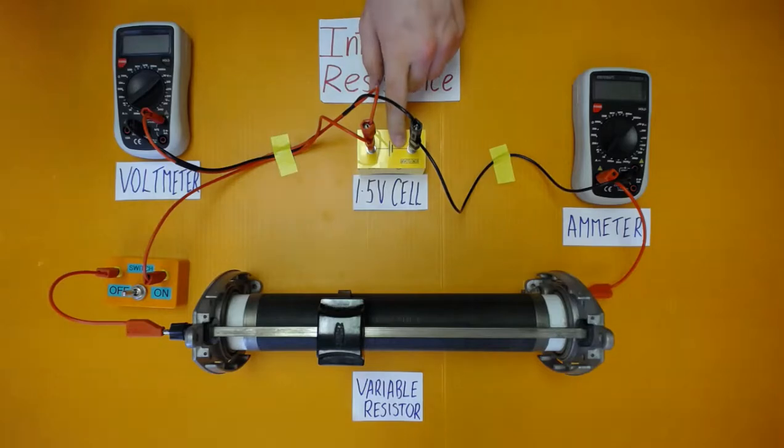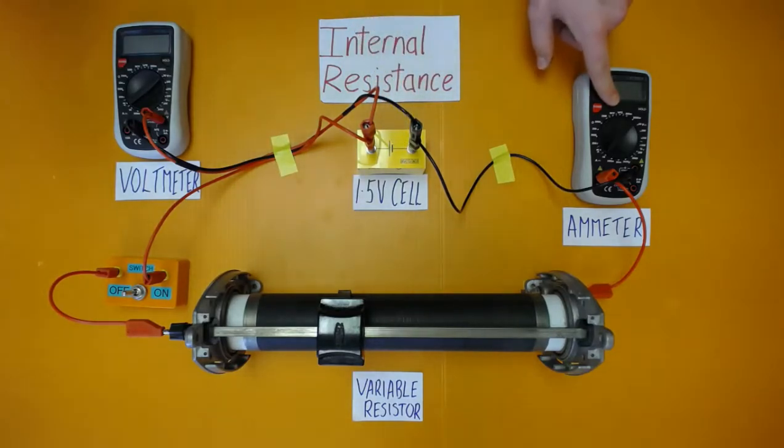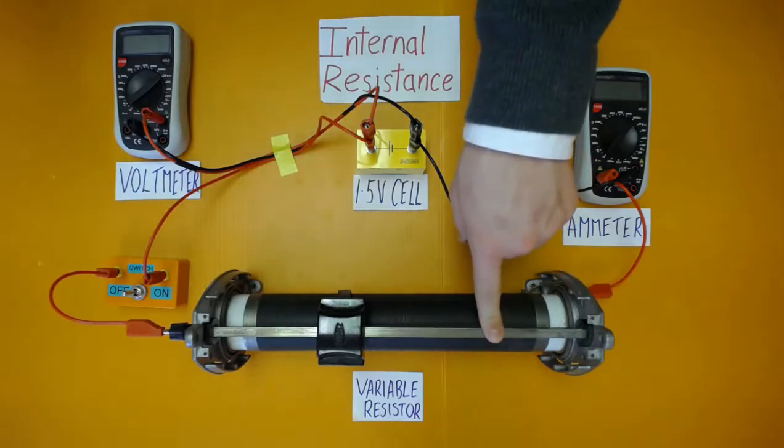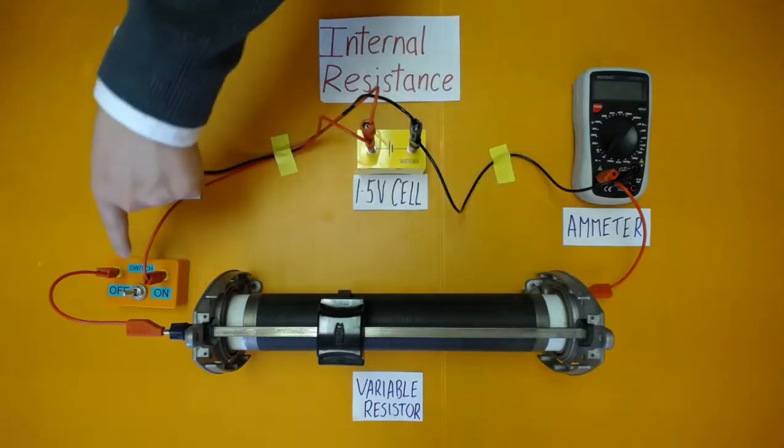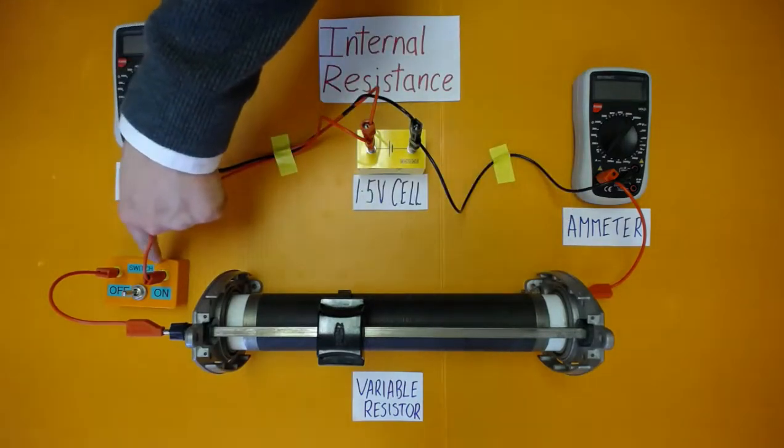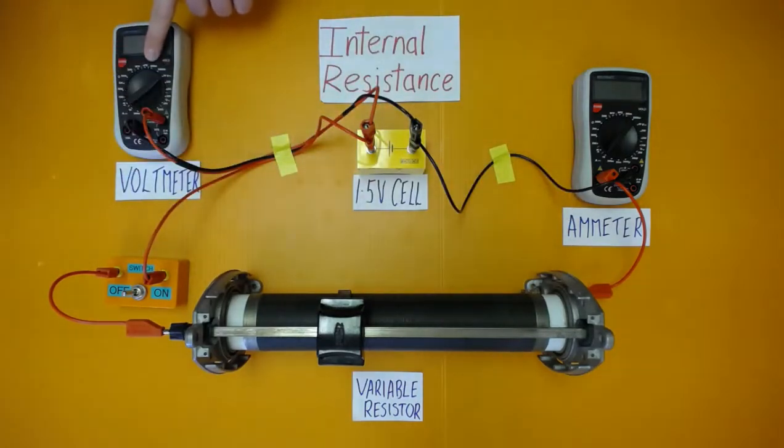We have a 1.5 volt cell as our power supply, an ammeter to measure the current, a variable resistor to facilitate readings of different resistances and therefore different voltages and currents, a switch to turn the circuit on and off, and a voltmeter to measure the voltage.